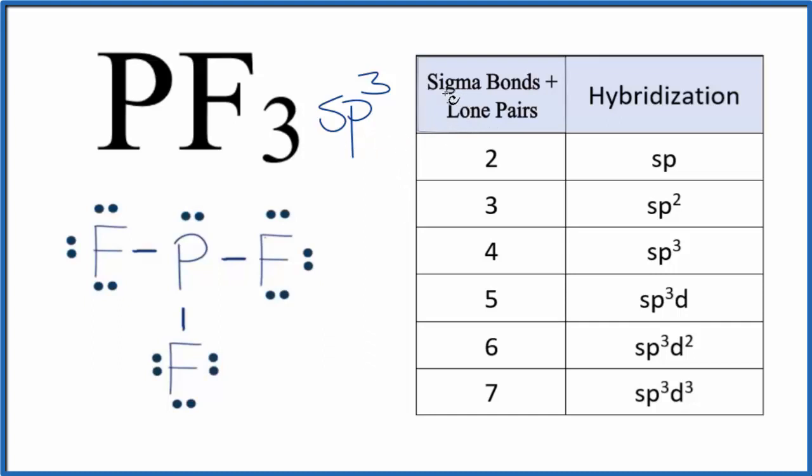First, we could look at the number of sigma bonds and lone pairs. Sigma bonds are single bonds. We have one, two, three, and then we have this lone pair on the phosphorus. So one, two, three, four—that gives us SP3 hybridization. That's one way to do it.